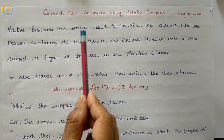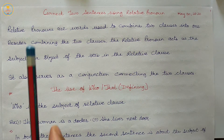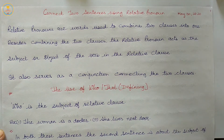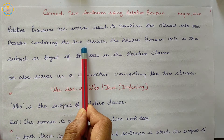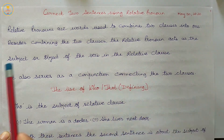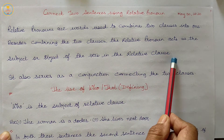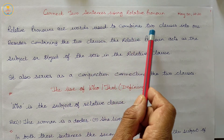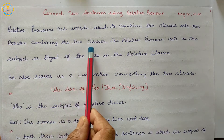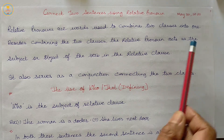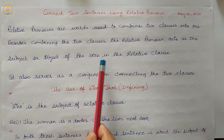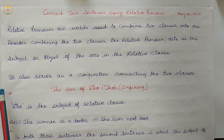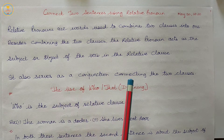Relative pronouns are words used to combine two clauses into one. Beside combining the two clauses, the relative pronoun acts as the subject or object of the verb in the relative clause. It also serves as a conjunction connecting the two clauses.